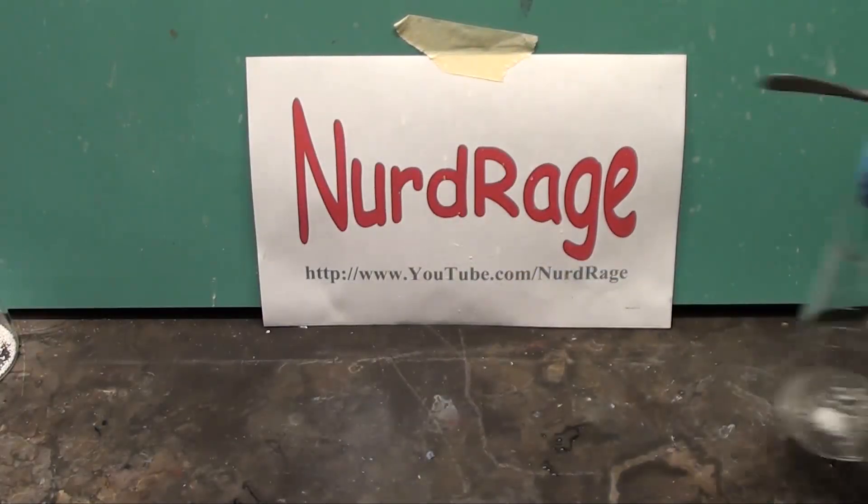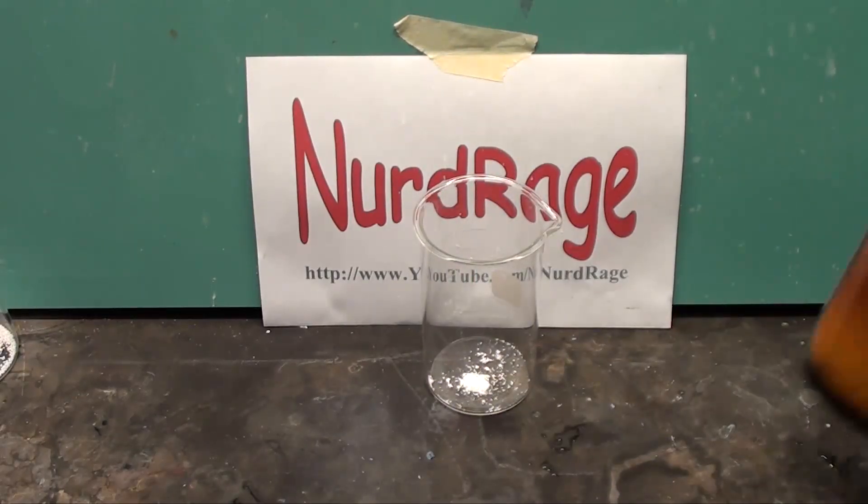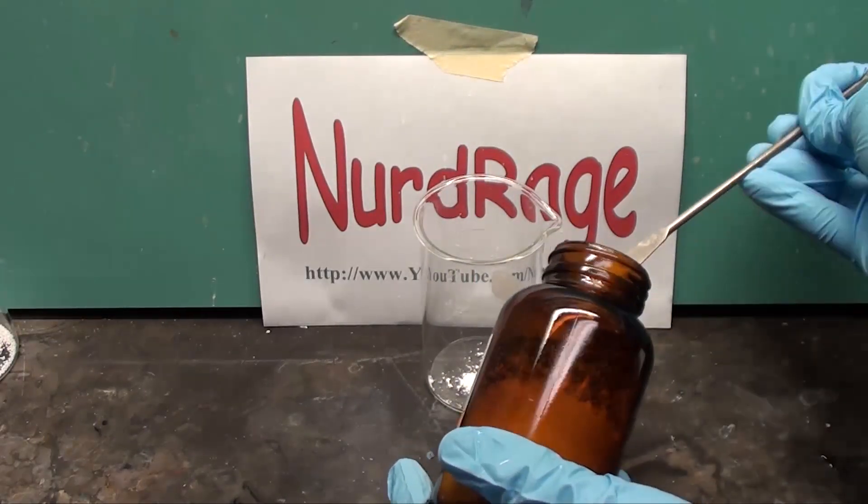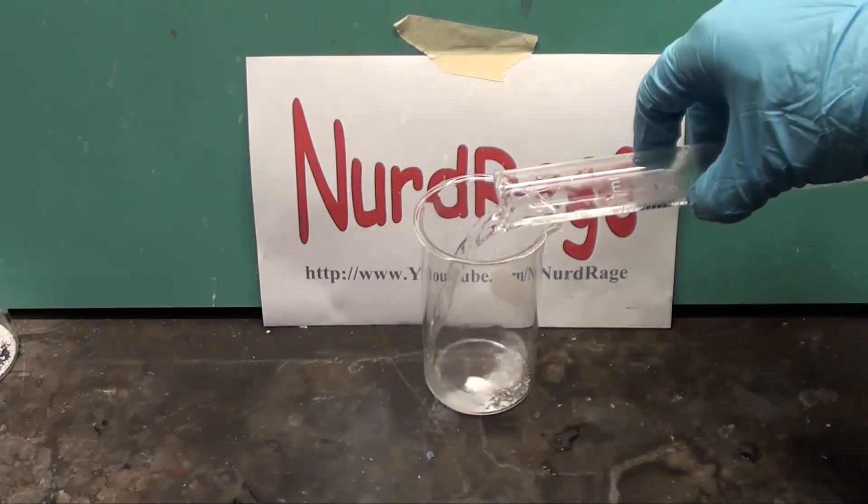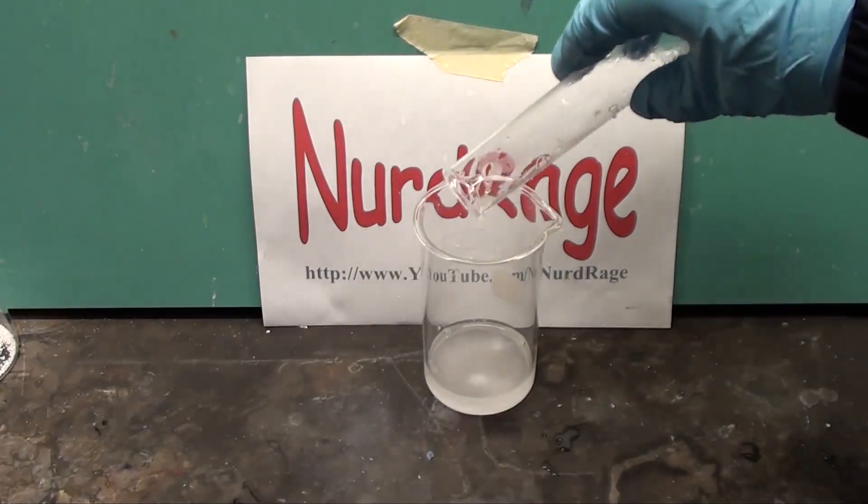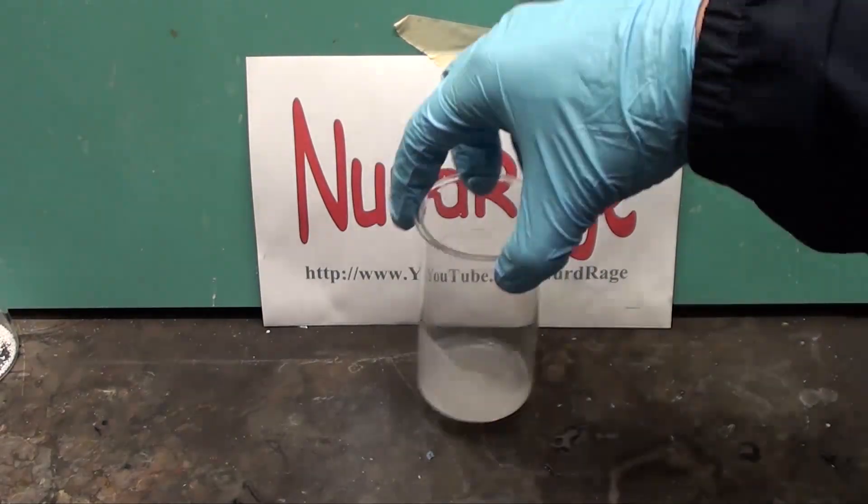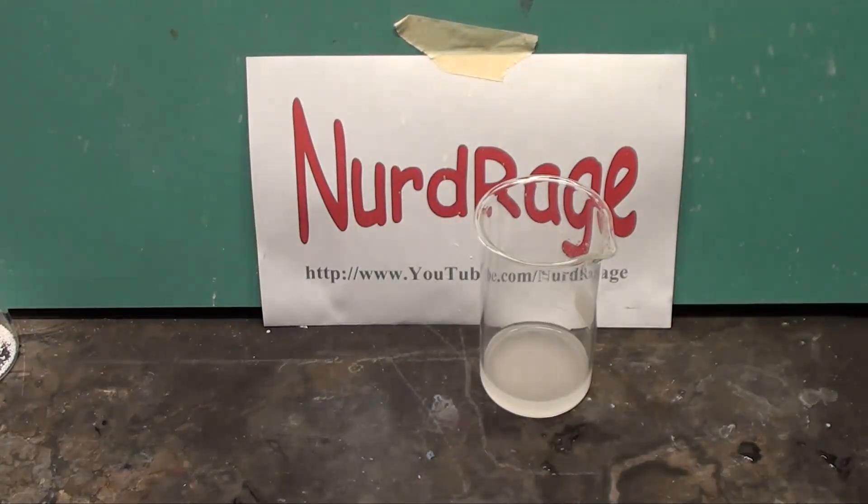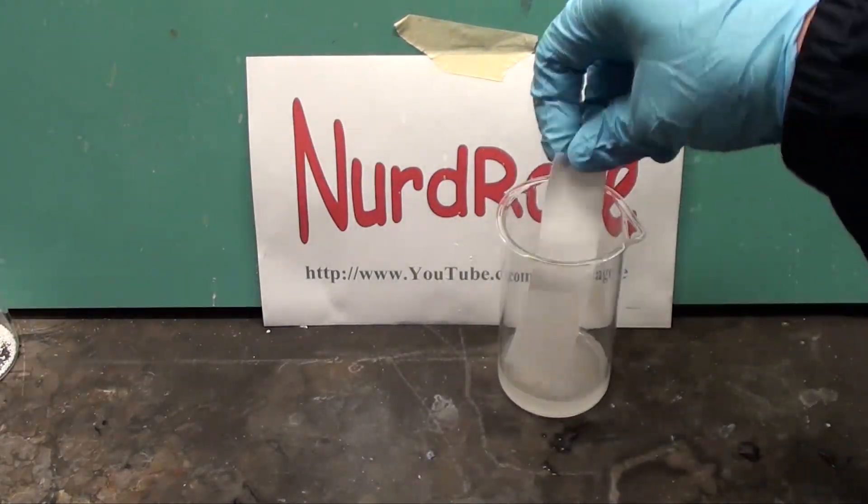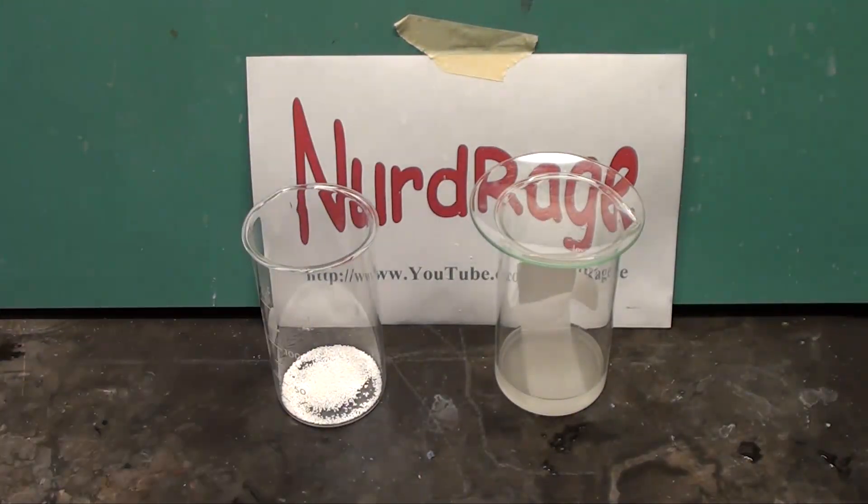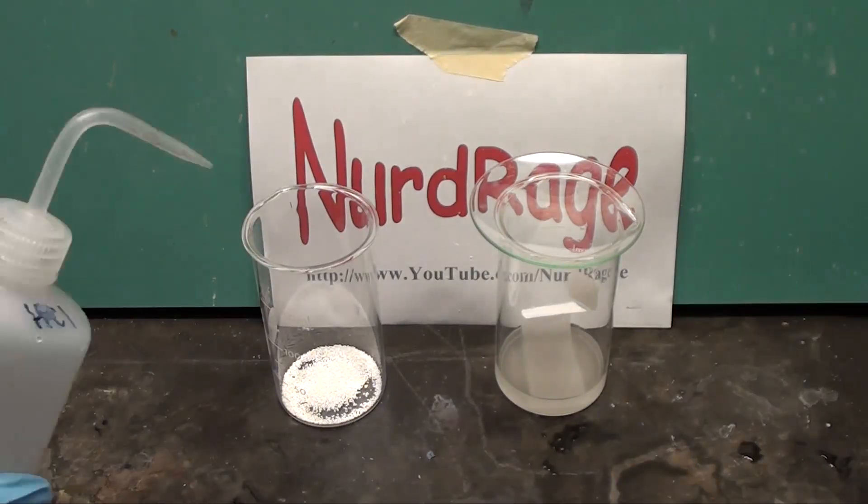To test for chlorine gas you can make a test solution by mixing about 100mg of starch with about half a gram of potassium iodide and 20mL of water. The exact quantities aren't critical. Shake it up to dissolve as much as you can. Dip in a strip of filter paper to soak it up. Now I'm going to cover it to protect it from the chlorine that I'm going to make over here.